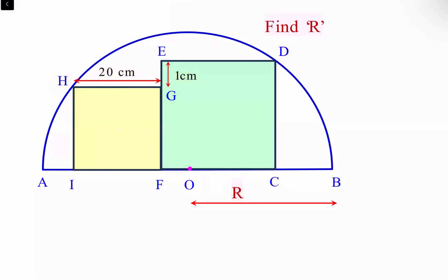Here O is the center of the semicircle. So let's join O D. So O D length will be nothing but R. Also we'll join O H. O H is also radius R.